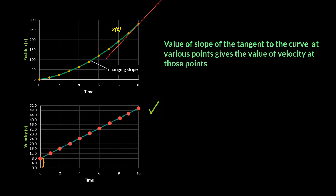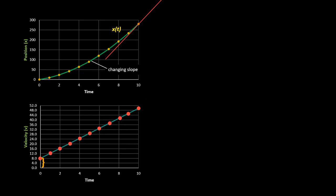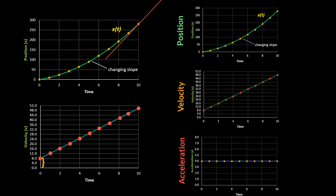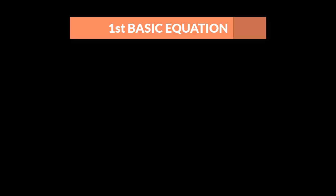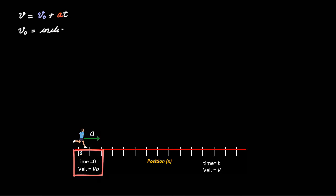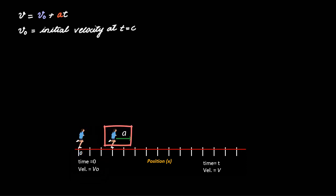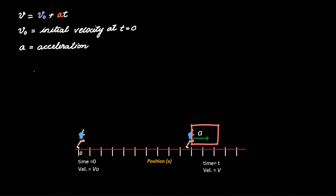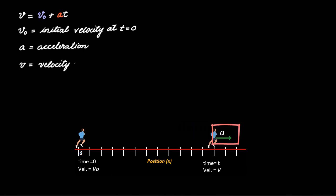Since this is a straight line, you know that acceleration would be constant. In most numerical problems, acceleration will be constant, and there are two basic equations which can be used to solve all numerical problems. The first basic equation that connects velocity, acceleration, and time of motion is v = v₀ + at, where v₀ is the initial velocity, a is the constant acceleration, and v is the final velocity after time t.